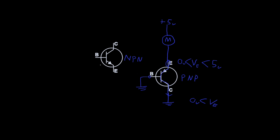Now let's look at the NPN. The NPN is going to be very similar, but it has a few different attributes. We'll draw the same type of circuit, but it'll be a little different. We have the same plus 5 volts and the same motor connected to ground. Notice that the emitter and collector are actually flipped on an NPN compared to a PNP.